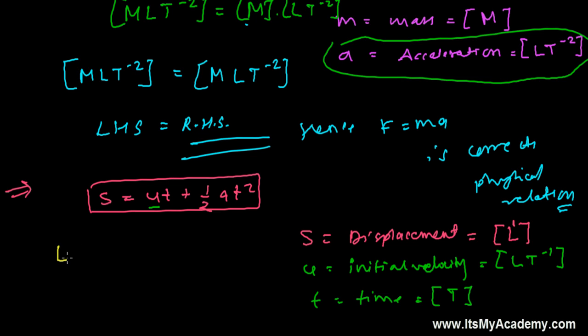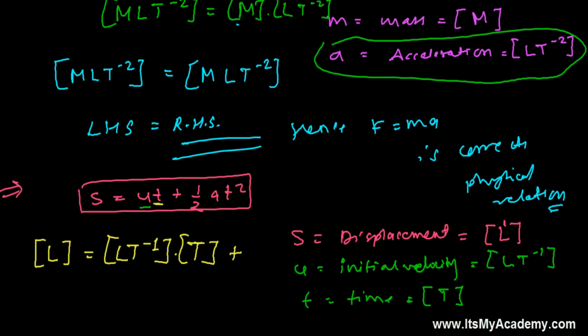S is simply L here, and U is LT^-1. This time represents simply T, so it's here. Plus, this half AT squared - constants do not have the dimension, so we can ignore this.